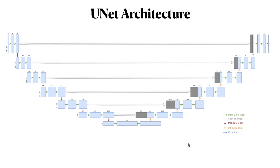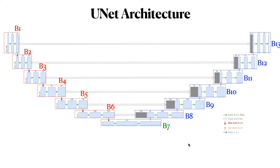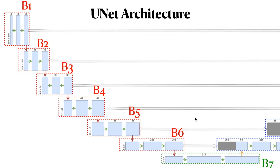Hi everyone, today we are going to learn a deep learning architecture called the U-Net model. The U-Net model is typically used for image segmentation. I'm going to talk about the U-Net model that I implemented in my project. You can customize your U-Net model and implement it into your own project. For the U-Net architecture, we are going to introduce it in three parts: the downsampling part, the bottleneck, and the upsampling part.